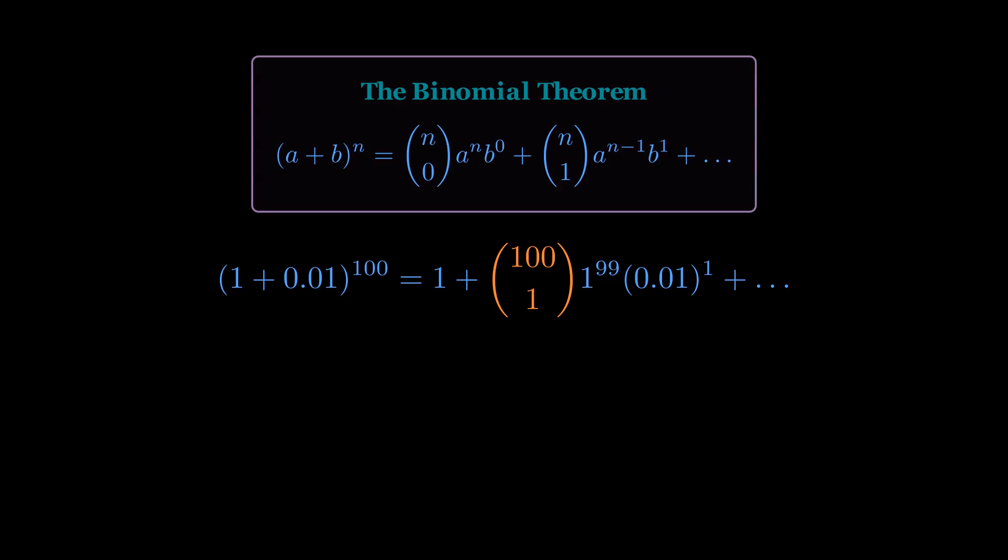This part, 100 choose 1, asks how many ways can you choose one item from 100? There are exactly 100 ways. So, that becomes 100.